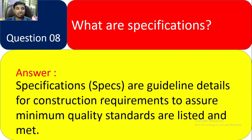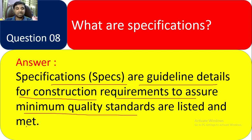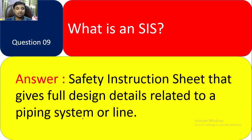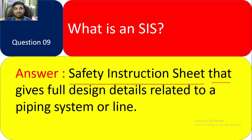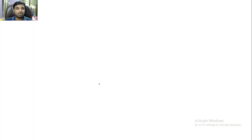Question 8: What are specifications? Specifications are guideline details for construction requirements to assure minimum quality standards are listed and met. You have to do the work as per those minimum quality standards. Question 9: What is SIS? Answer: SIS stands for Safety Instruction Sheet — it gives full design details related to the piping system and online. People are sometimes confused by this question — SIS means Safety Instruction Sheet.